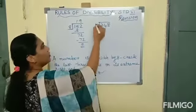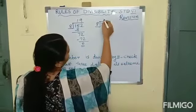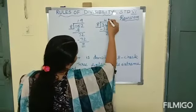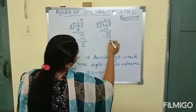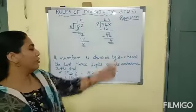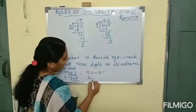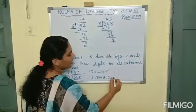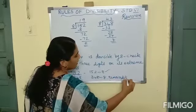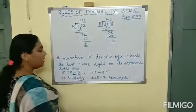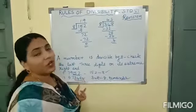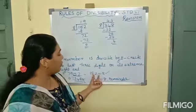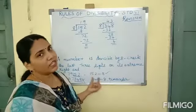Now check 57,348. Take the last 3 digits: 348. Check whether 348 is divisible by 8. 4 eights are 32, 34 minus 32 is 2, giving 28; 3 eights are 24, remainder is 4. You got a remainder of 4, so 348 is not completely divisible by 8. Therefore, 57,348 is not divisible by 8. To check divisibility by 8, take the last 3 digits and check if that number is divisible by 8.